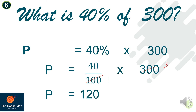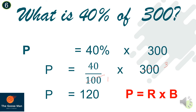Let's recall: 40% is our rate, 'of' is multiplication, and 300 is our base. In order to solve for the percentage, we use the formula: percentage is equal to rate times base. So P = R × B.